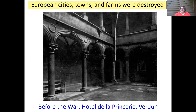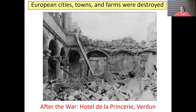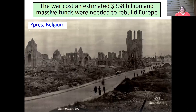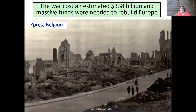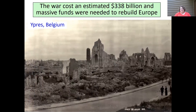Verdun was one of the bloodiest battles of the war. This is one of the hotels prior to the war; after the war, complete rubble. This is a town in Belgium where another major battle had been fought — you can see that very little is left standing.